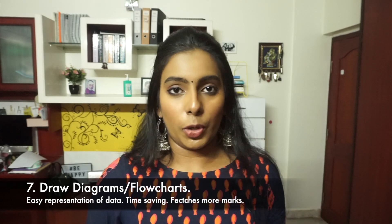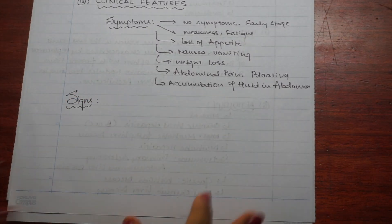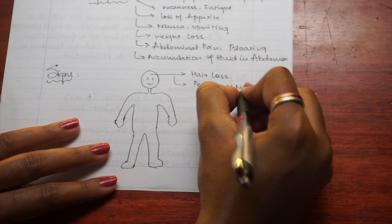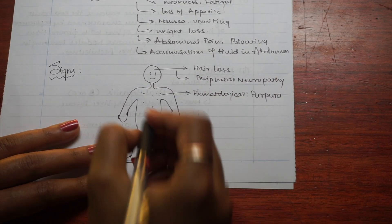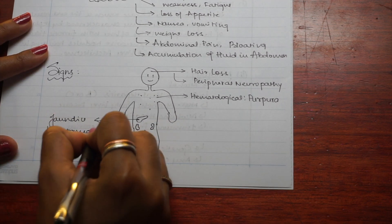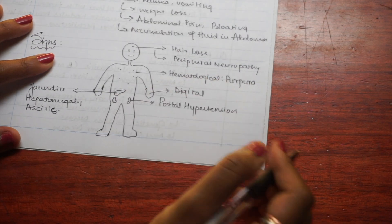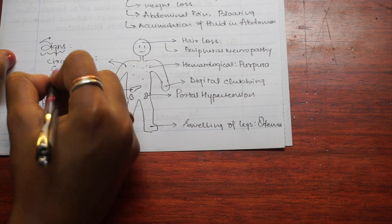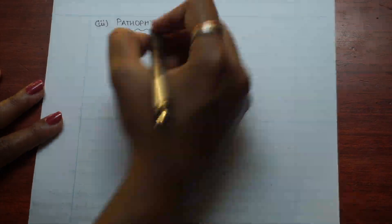The most basic yet most important hack is to draw diagrams and flow charts throughout your paper. For cirrhosis of liver, just draw a human body and label the features seen in each part — it's time-saving, it speaks for itself, and the examiner gets a good impression. You get instant marks and page utilization is done properly too. Look for every opportunity to draw diagrams.